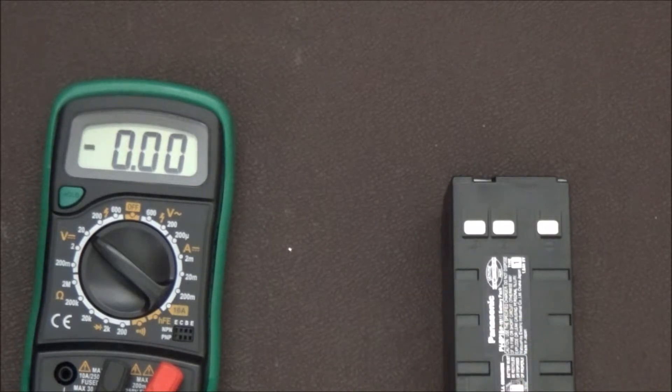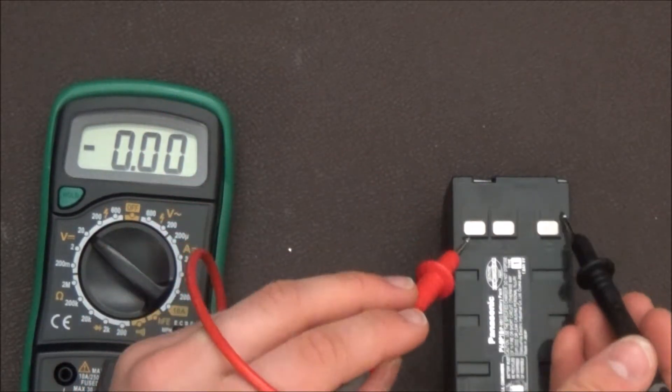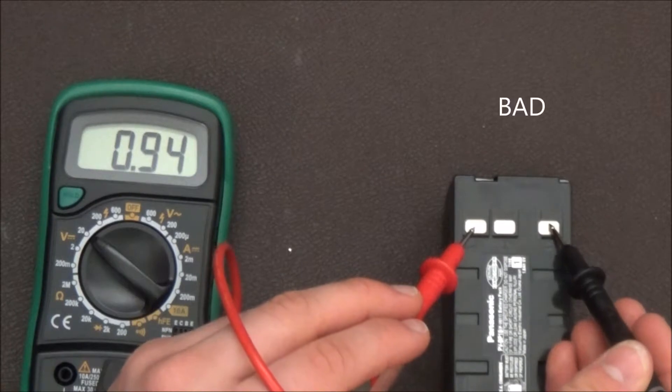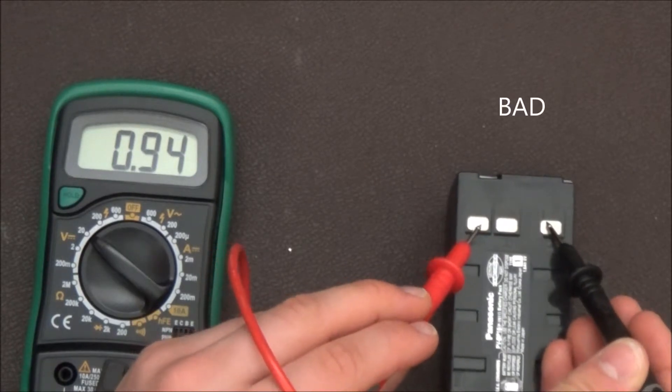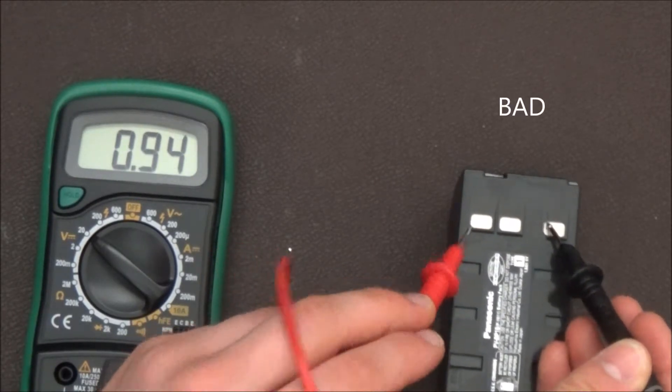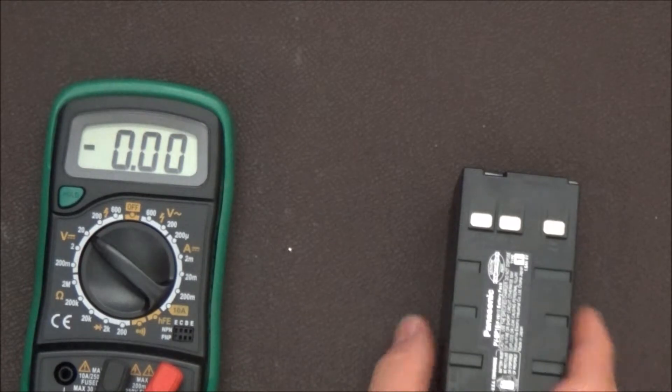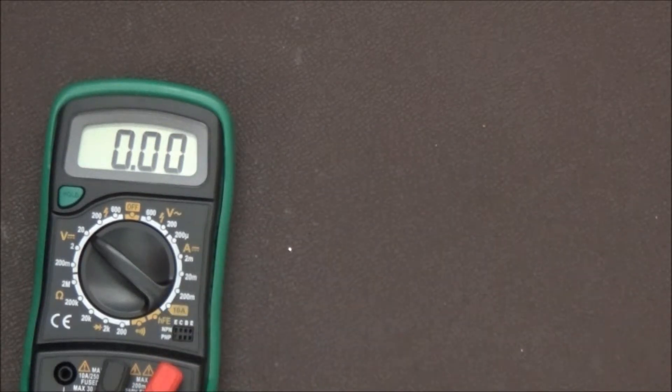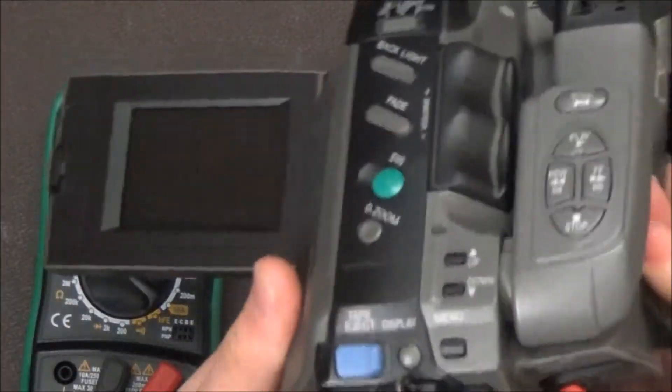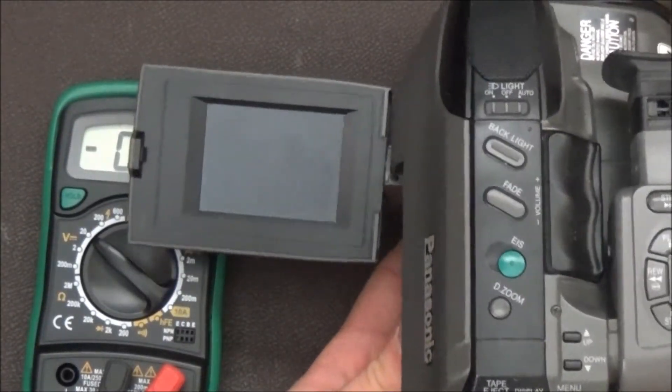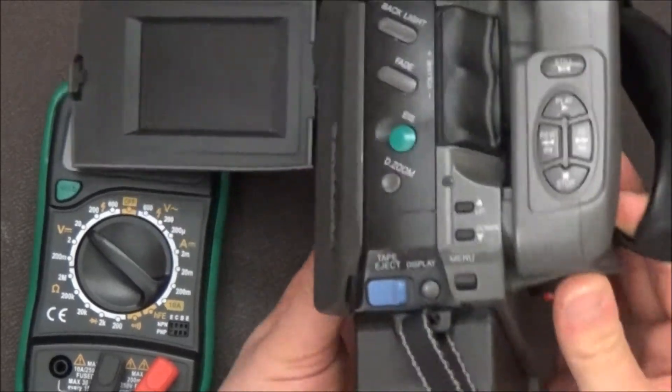This one rated at 6 volts. It has positive, a T, and a negative. It doesn't have the C. 0.94 volts. And yeah, as you could probably imagine, the camcorder does not even turn on. No motors go, because it takes VHSC tapes. Nothing happens.